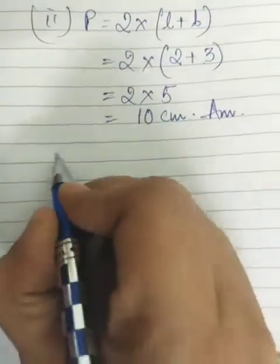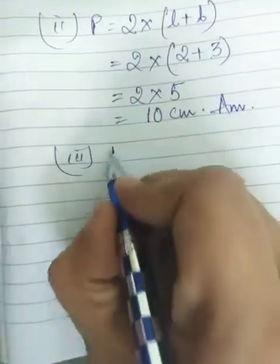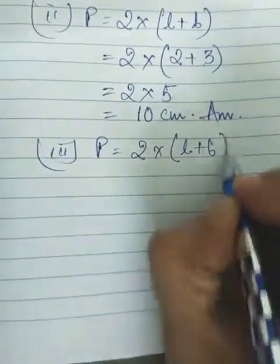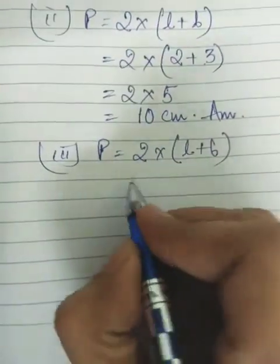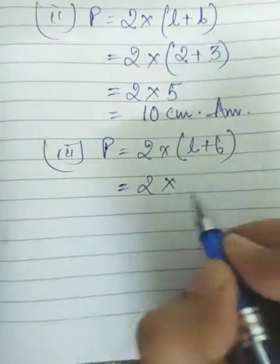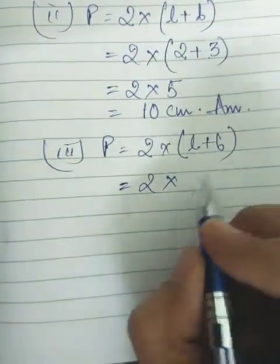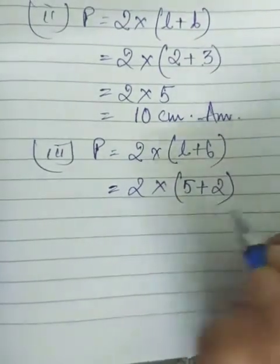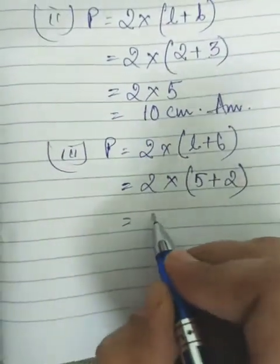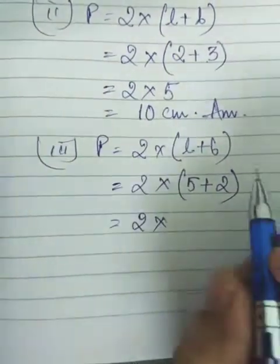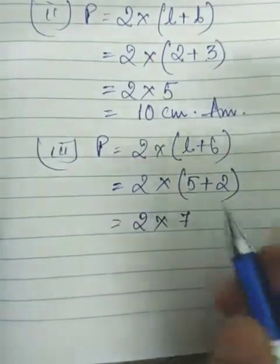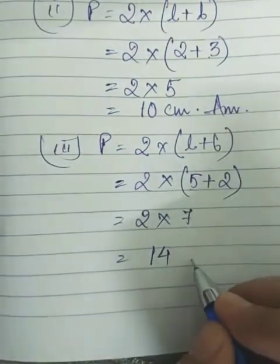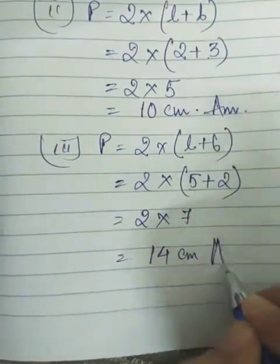The third one: perimeter of a rectangle is 2 into (length plus breadth). The question gives length as 5 cm and breadth as 2 cm. So it will be 2 into (5 plus 2), which is 2 into 7, giving 14 centimeters as the answer.